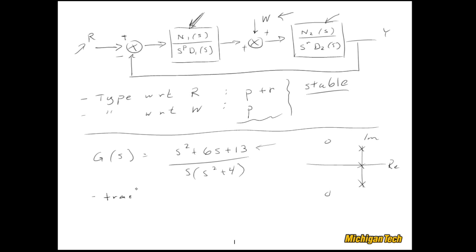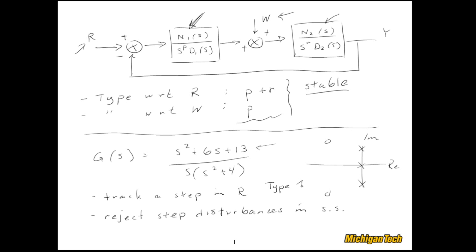We have two design requirements: the system must be able to track a step in the reference input R, and it must be able to reject step disturbances in steady state. Framed in terms of system type, the system needs to be type 1 with respect to R and type 1 with respect to the disturbance W.